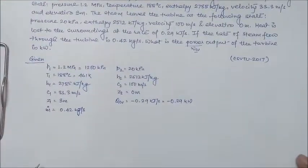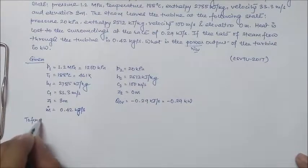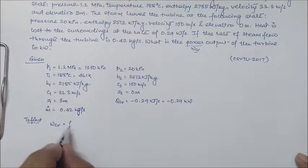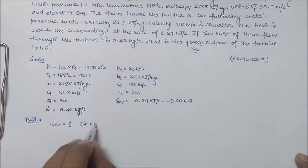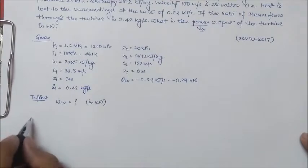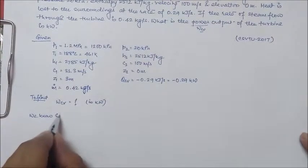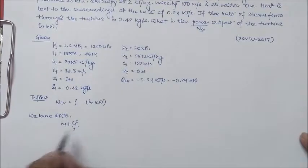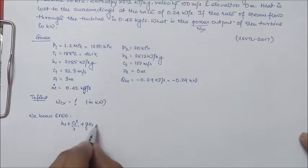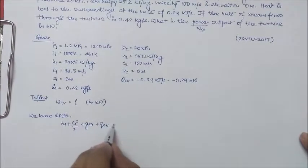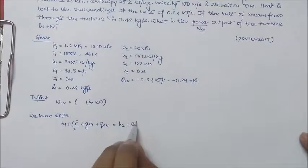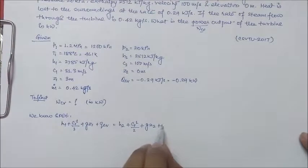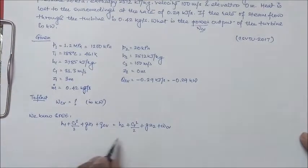What we have to find out is WCV. So we know SFE as H1 plus C1 square by 2 plus GZ1 plus QCV is equal to H2 plus C2 square by 2 plus GZ2 plus WCV, in specific terms.